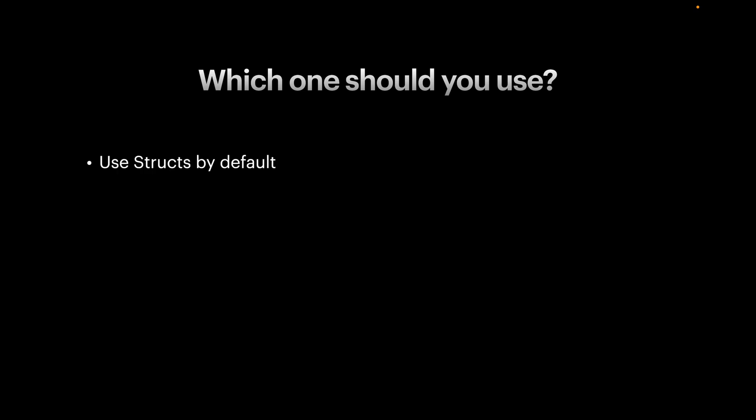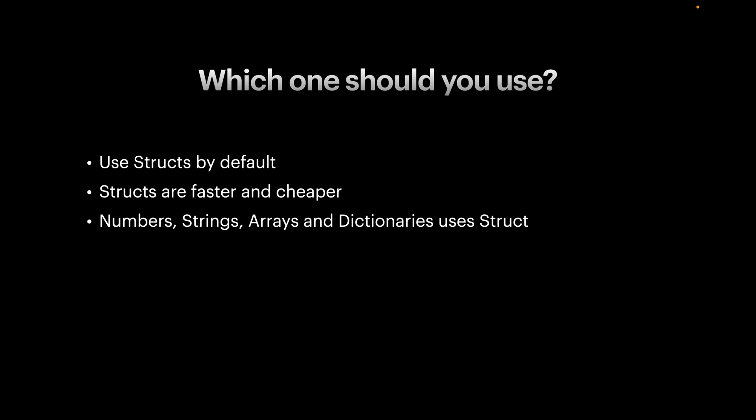So how do we decide which one to choose when modeling our data? Use structs by default — they're cheaper, faster, and fulfill almost all your needs. The Swift standard library and Foundation use structs for types used every day, such as numbers, strings, arrays, and dictionaries.